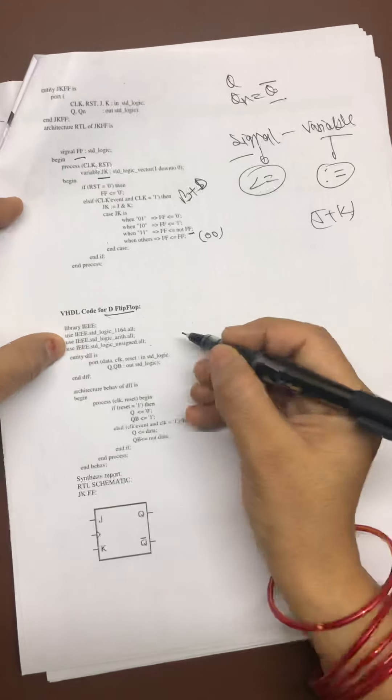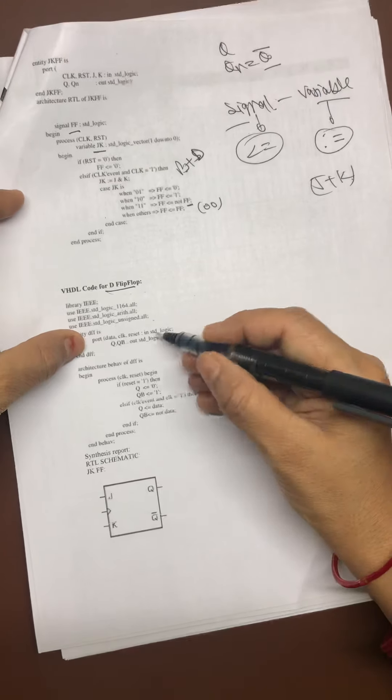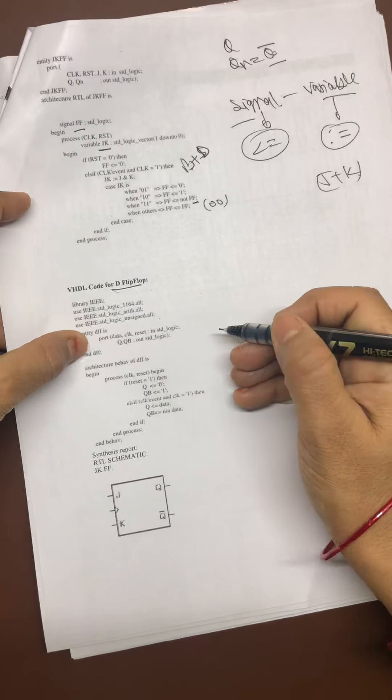These are the library which are there. Then what I require in my D flip-flop? Data, clock, reset, Q and QB.